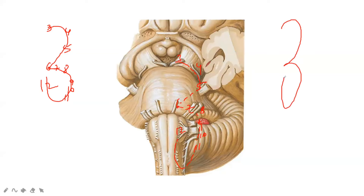The fourth cranial nerve is also the thinnest with the longest intradural/intracranial course, so it gets stretched. It comes from the dorsal side. Also visible here are the mammillary bodies and the infundibulum of the pituitary gland. The anterior perforating substance is here. The interpeduncular fossa is between the anterior and posterior perforating substances — it lies between the two peduncles of the midbrain, and its contents include mammillary bodies, the oculomotor nerve, and the posterior perforating substance.